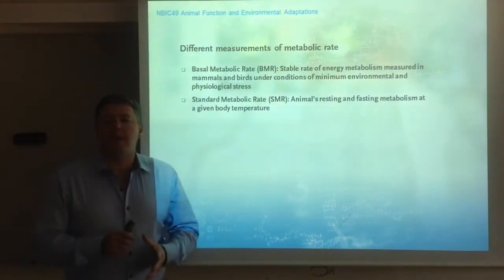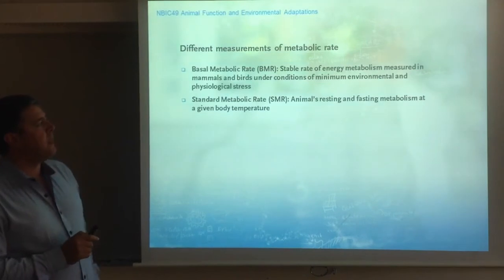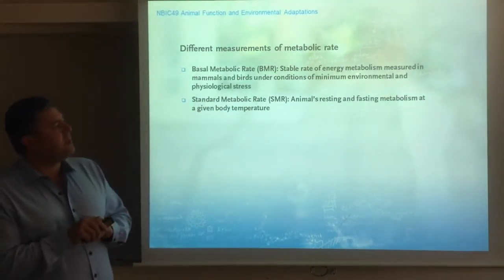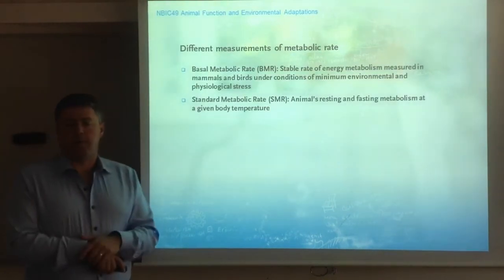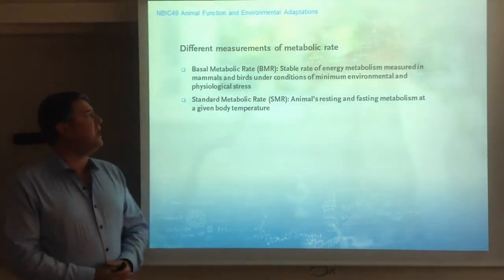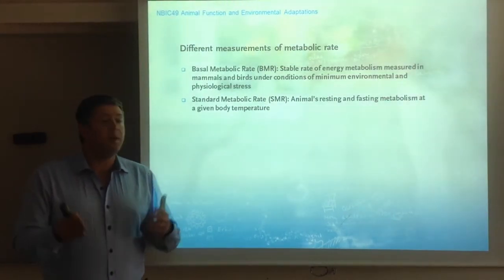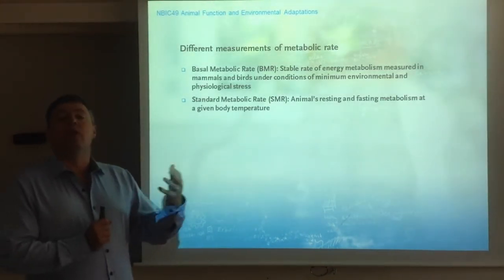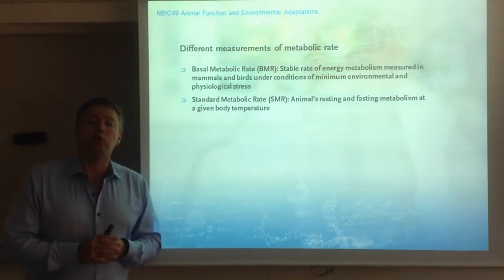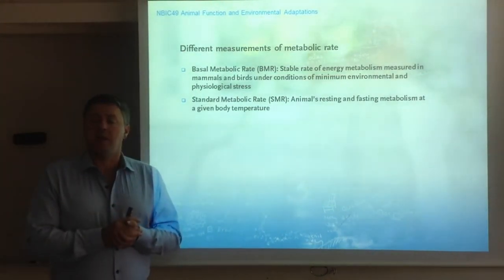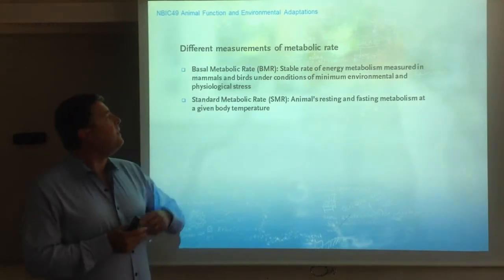What are the different measurements of metabolic rate? Let's start with basal metabolic rate. The basal metabolic rate is the stable rate of energy metabolism measured in mammals and birds — endotherms — under conditions of minimum environmental and physiological stress. In humans, basal metabolic rate is obtained long after feeding, because there is a specific dynamic action — increased oxygen consumption after feeding. It is measured in a neutrally digestive state and also in a thermoneutral environment, where we don't have to produce heat or waste energy to cool ourselves down.